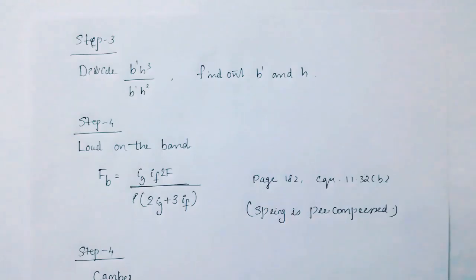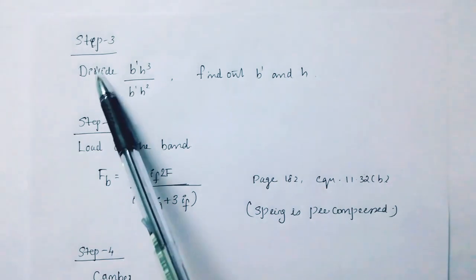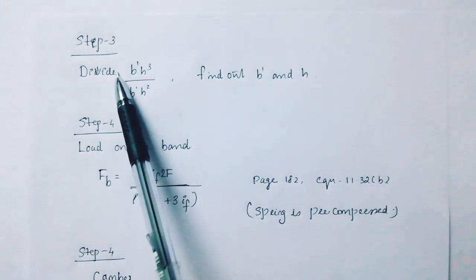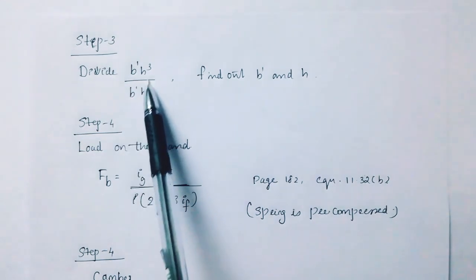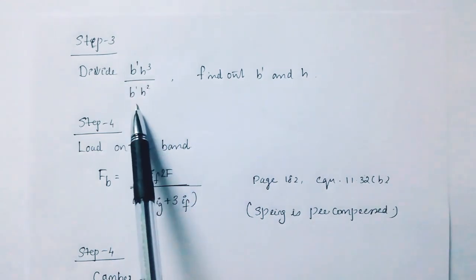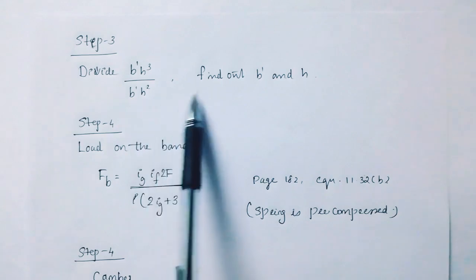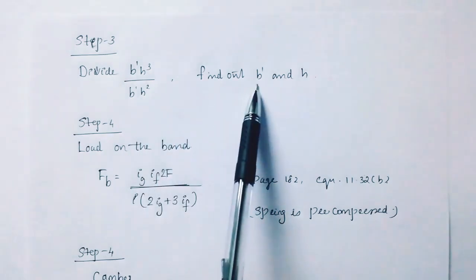Step 3 is to divide b'h-cubed by b'h-squared to find out b'h.